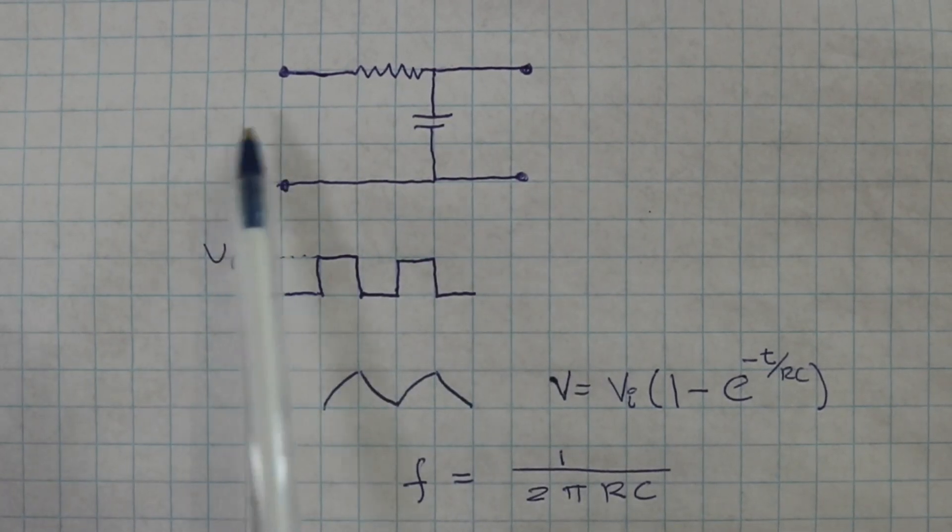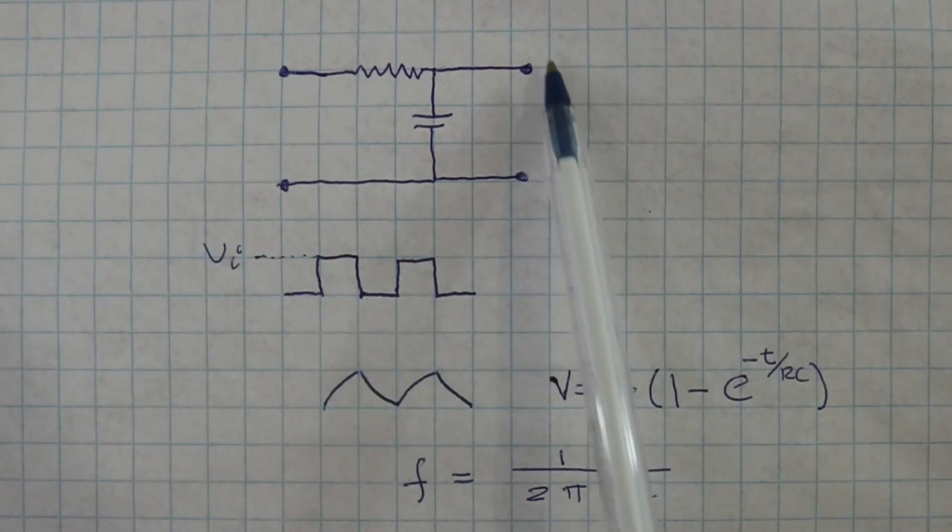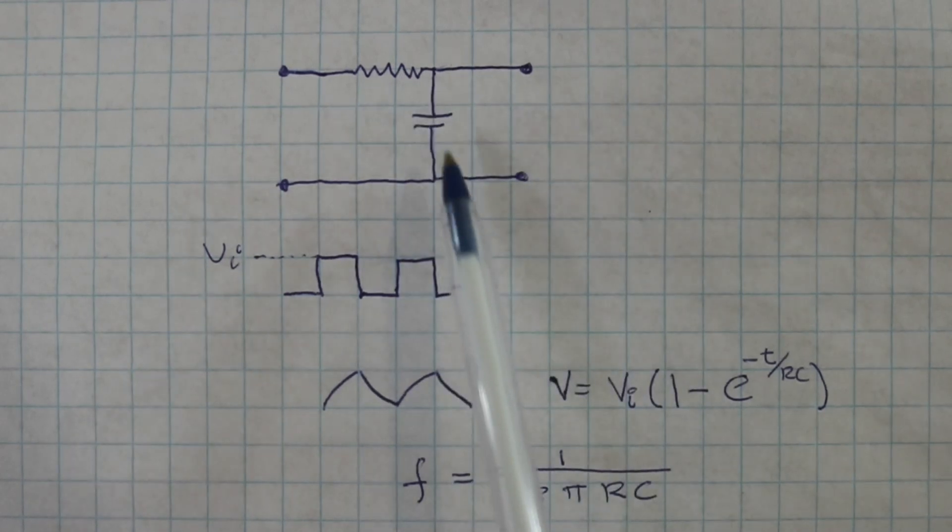Here we have the input signal, the square wave, and here we will have the output, which will be the voltage at the capacitor's terminals.